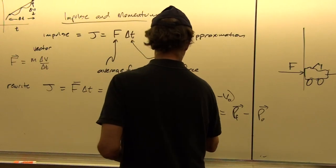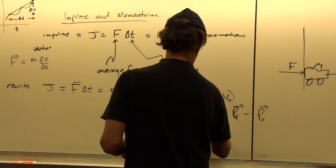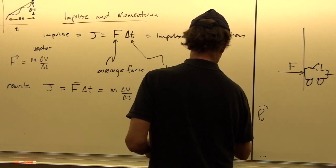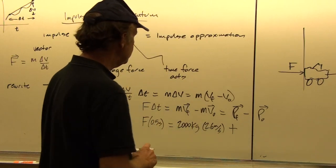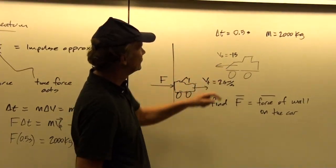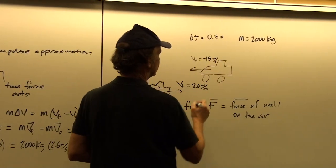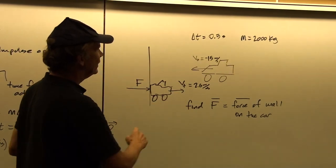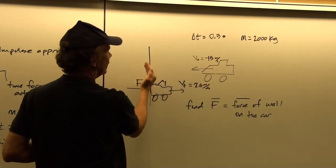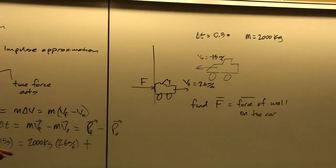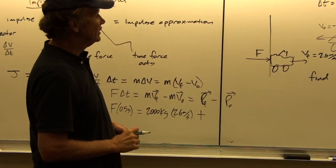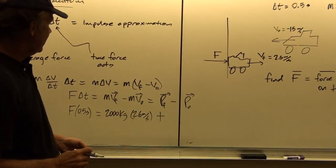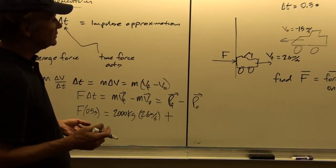V_final is 2.6 meters per second, minus a negative v_initial. So that makes this positive because v_initial is negative. We have to be careful not to just subtract 2.6 from 15, because the mass first has to slow down to zero, then speed back up to 2.6. So the change in velocity is 15 plus 2.6. That's what happens when we subtract the negative, giving rise to a positive force.